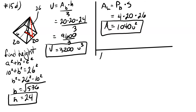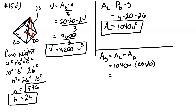Now we need the surface area. For a pyramid there is no top, just a bottom. So the surface area is the lateral area plus the area of the bottom. The lateral area is one thousand and forty, and the area of the bottom is twenty by twenty, which is four hundred. Adding those together we end up with one thousand four hundred and forty units squared.